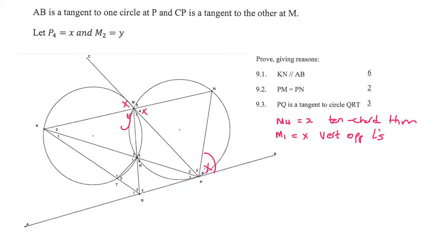Now we look at tangent PC and chord KM. Remember, if you struggle with the tan-chord theorem, put one finger on either side of the chord and try to bring them together — that gives you the alternate segment angle. Using this in the second circle, we can say angle R2 is equal to x because of the tan-chord theorem.